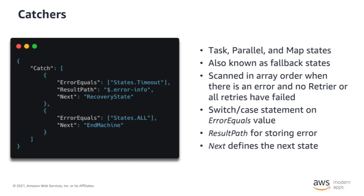Catchers, by comparison, are when you've decided to handle an error rather than retrying the request — also known as fallback states. They're also valid for task, parallel, and map states, and are scanned in array order. You get a result path for storing the error. If you receive a timeout error, you move forward to a recovery state which uses the error info to attempt recovery. But if you receive any other type of error, you move on to the end machine state.